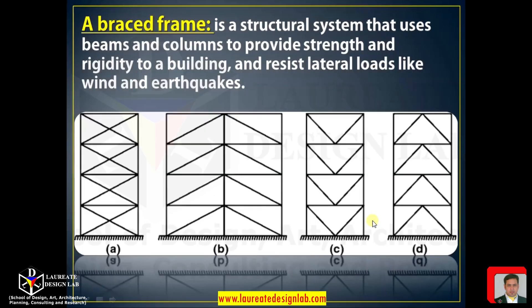Now let's understand a braced frame. A braced frame is a very important structural element that uses beams and columns to provide strength and rigidity to a building against lateral loads like wind and earthquake. There are four main combinations: a cross or scissor-like pattern, an arrow-like pattern, an inverted V, and a V shape. There could be multiple combinations depending on requirements.